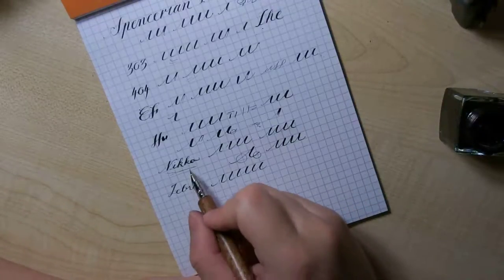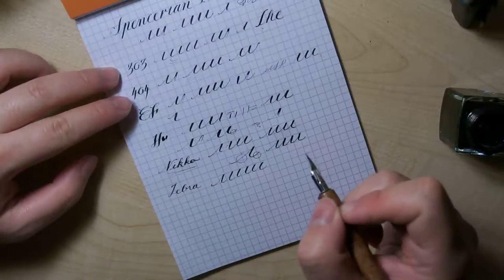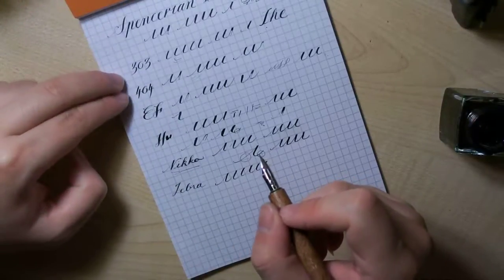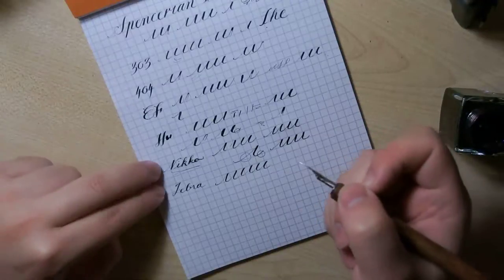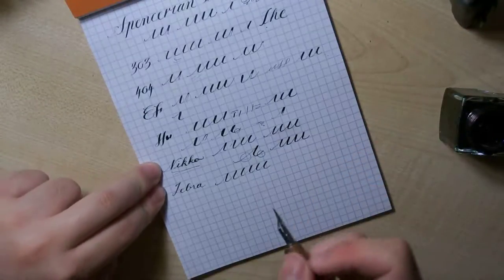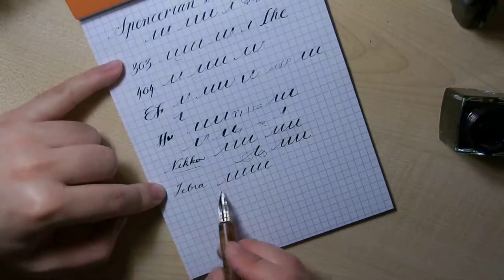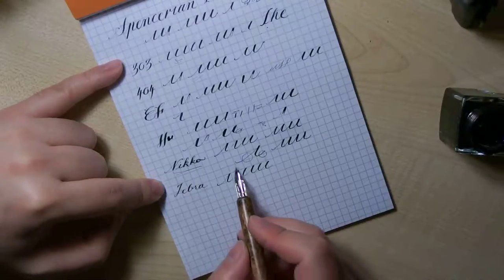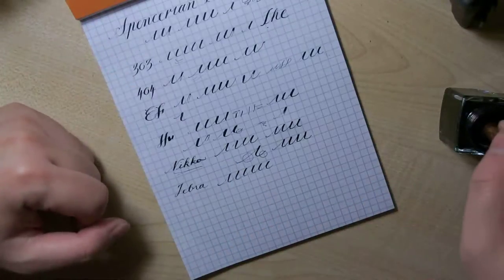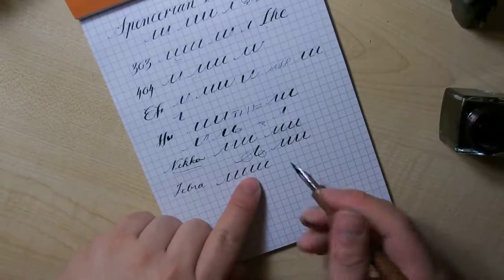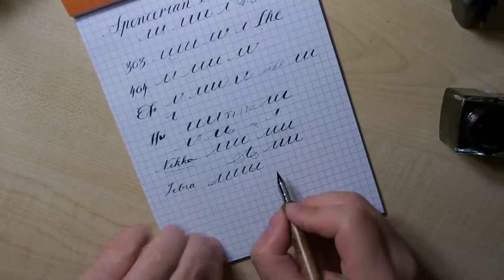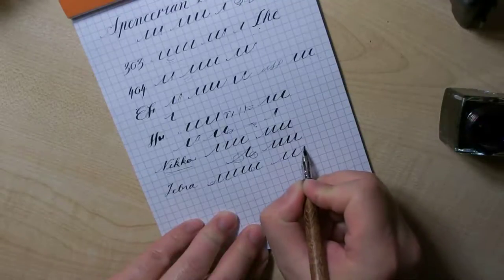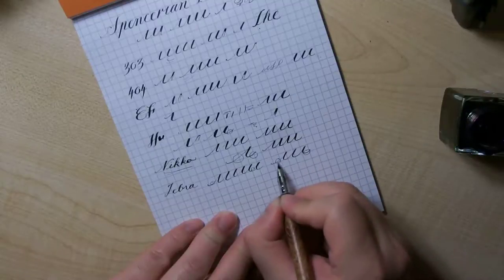Now the difference between the Nikko and the Zebra is very similar to the difference between the 303 and the 404. Both pairs have similar flexibility and these are super flexible, fully flexible. These are not that flexible but the Zebra is like the 303, giving you slightly thinner thick and thin lines while the Nikko gives you thicker lines. The line and the returning line variation is better with the Zebra, slightly better. There is still some difference between the two.